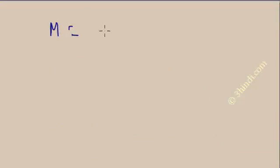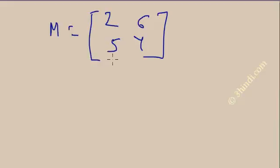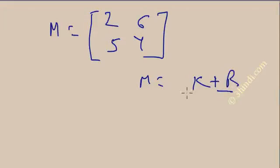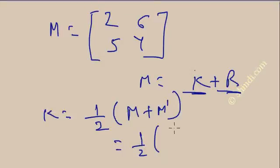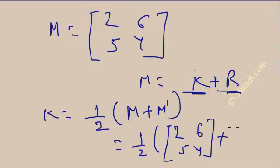Suppose matrix M is [2,5; 6,4]. I want to represent M as the sum of a symmetric matrix K and a skew-symmetric matrix R. The value of K is (1/2) times (M plus M dash). M is [2,5; 6,4] and M dash — make first row to first column — is [2,6; 5,4].